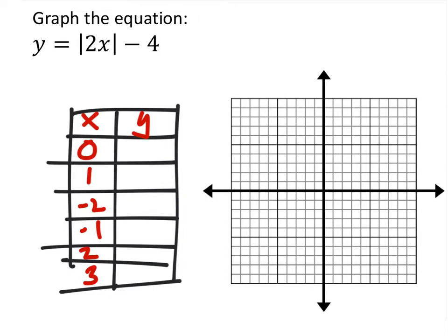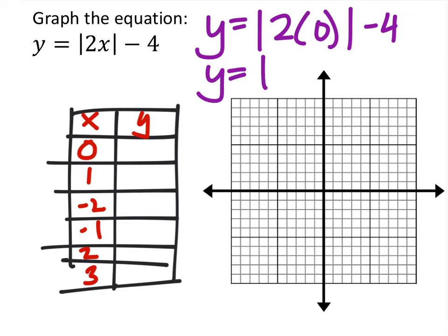So let's graph these points and figure out what we have. This first one, we got y equals absolute value of two times zero minus four. So y equals, what's the absolute value of zero? That's zero. So this kind of just goes away. So y is negative four, which corresponds with this. So I can graph that point, zero negative four, right here.